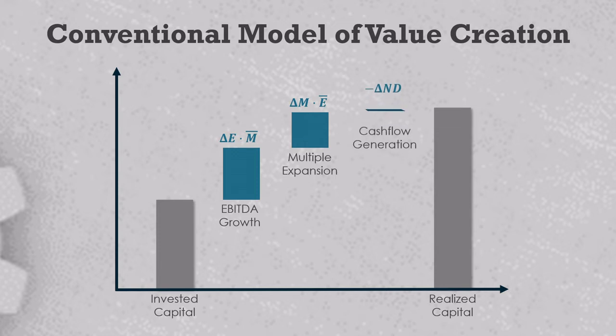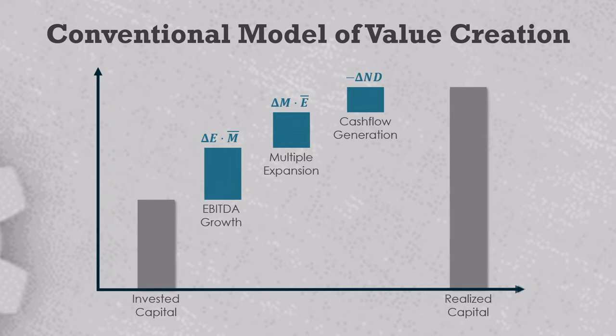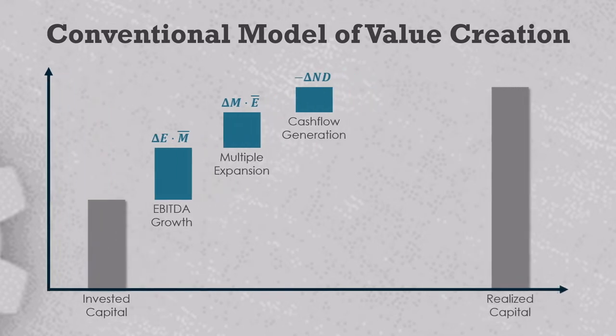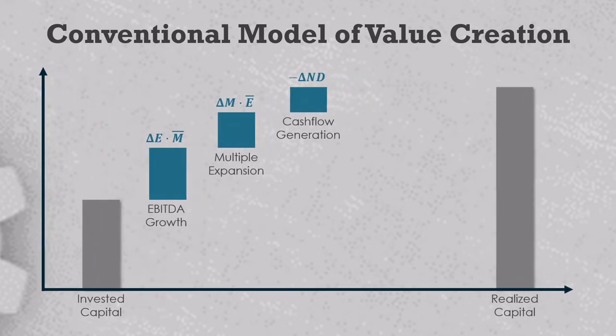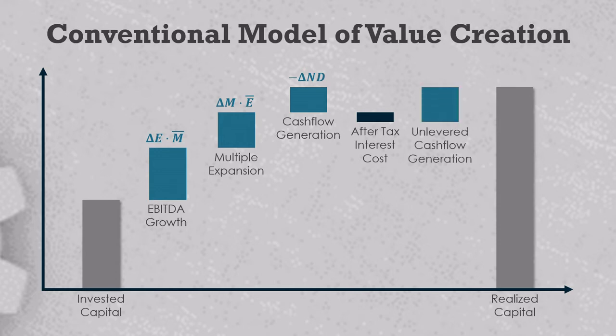What about those interest payments, the debt tax shield, and the financing risks? Well, the first two are easily built into cash flow generation. If the company didn't have to make interest payments on the debt, cash flow generation would have been higher. So you create a negative value driver for the after-tax interest cost, and then you can add it back to cash flow generation to create an unlevered cash flow generation measurement.